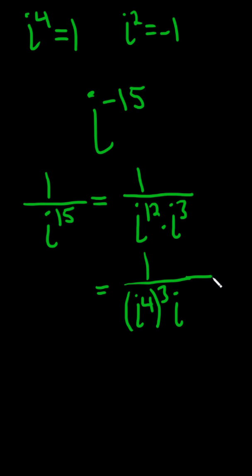And this i cubed, let's break it up as i squared times i. All right, let's do it. i to the 4 is 1, so we get 1 cubed. i squared is negative 1, and we're left with the i.